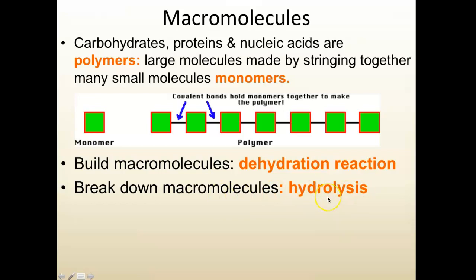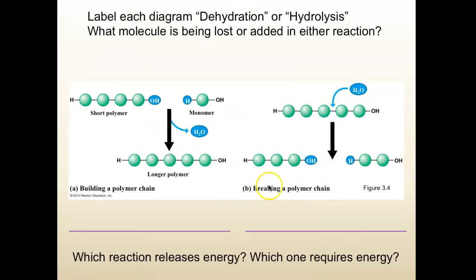When you build macromolecules the chemical reaction is called a dehydration reaction, and when you break down macromolecules it's called a hydrolysis reaction. 'Lysis' means to break open or break down — if a cell were to lyse, it ruptured. 'Hydro' refers to water, so when you break down macromolecules you use water to break them down. In dehydration, a monomer is added to a growing polymer: a hanging -OH and -H combine and leave as water, so you lose water — hence 'dehydration.'